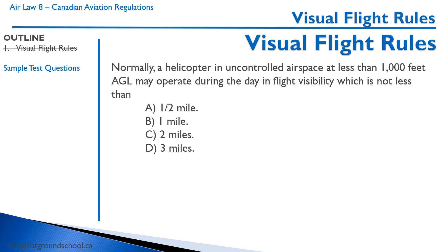Here's a question about helicopters, because helicopter pilots also write the pre-solo test, so we're responsible for knowing their rules as well. Normally, a helicopter in uncontrolled airspace at less than 1,000 feet AGL may operate during the day in visibility which is not less than — the correct answer is one mile.